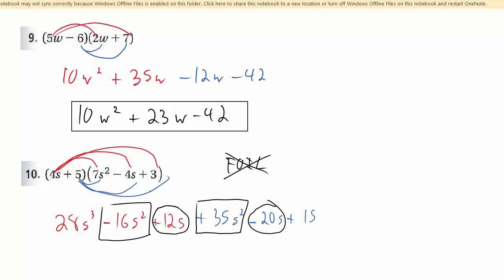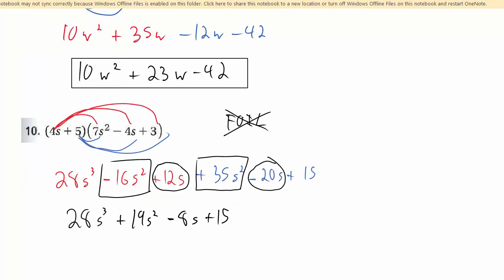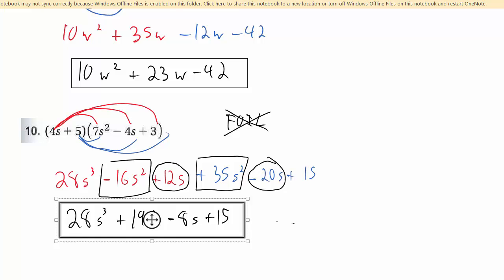You can also use the rectangular method, like on the study guide for the quiz. But distributive property always works. Just combine your like terms, make sure it's in standard form — which by default it should be — combine your highest powers first.